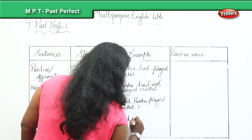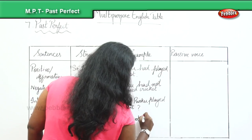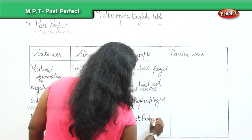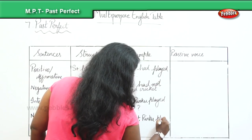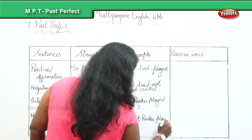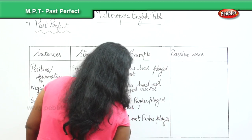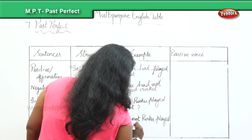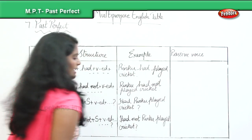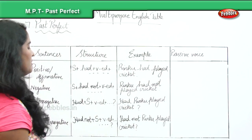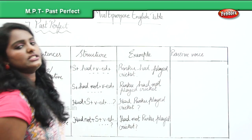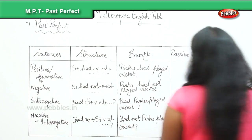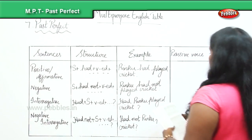And then comes the negative interrogative sentence: Had not Rinku played cricket? That is the negative interrogative form of the example given.